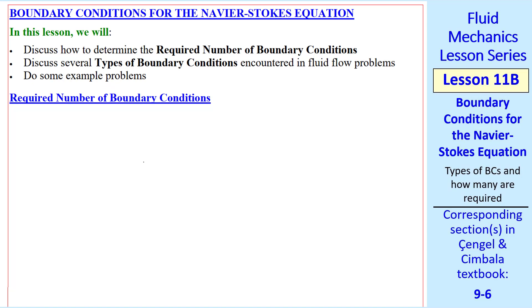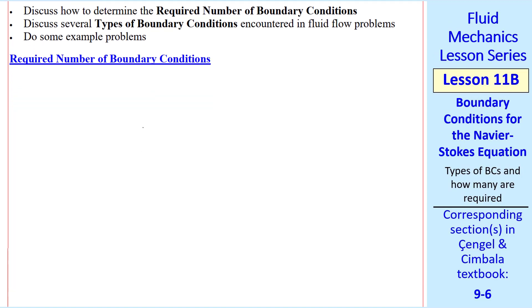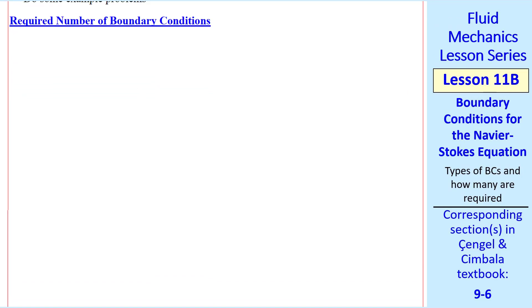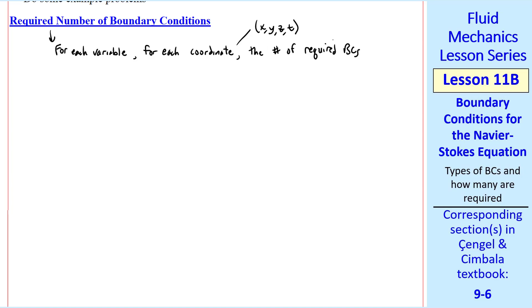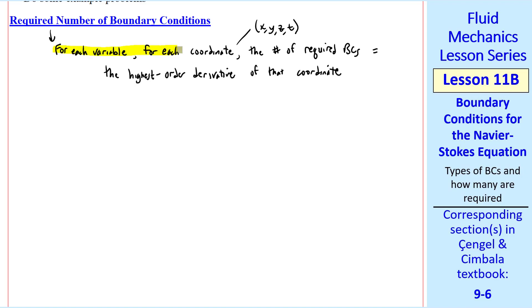For a given set of equations, how do we know how many boundary conditions are required? The answer is that for each variable, for each coordinate — by that I mean x, y, z, or t — the number of required boundary conditions is equal to the highest order derivative of that coordinate. The wording may not be clear until we do some examples.